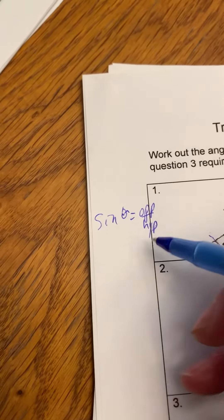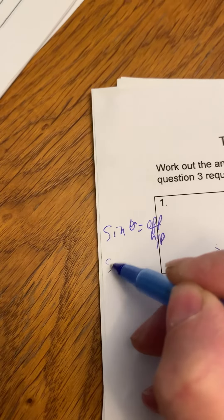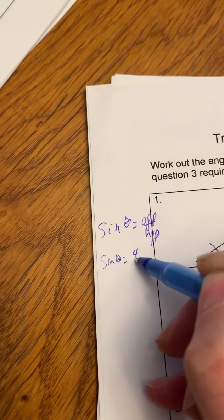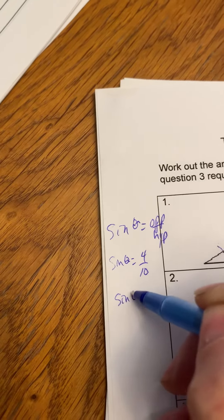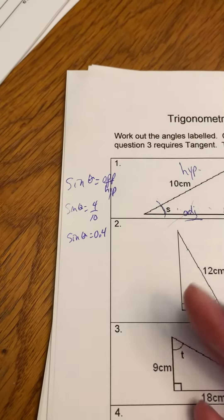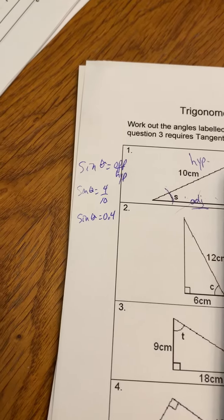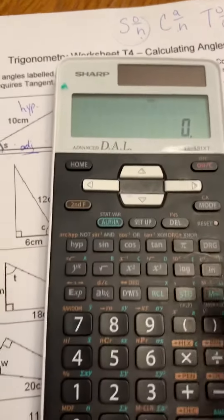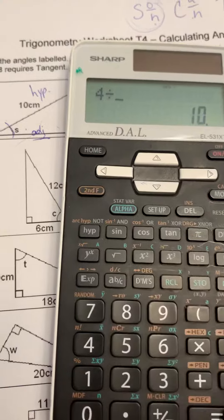Which is 4 over 10, which you actually end up with 4 tenths, which is not the angle. Okay, so this is when we start using some other buttons on our calculator. So you go like this: you punch in the ratio, which is 4 divided by 10.